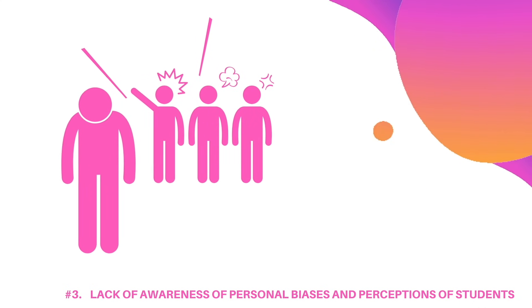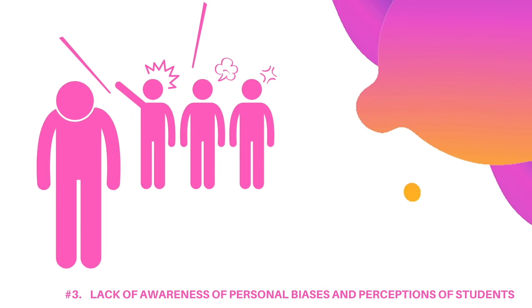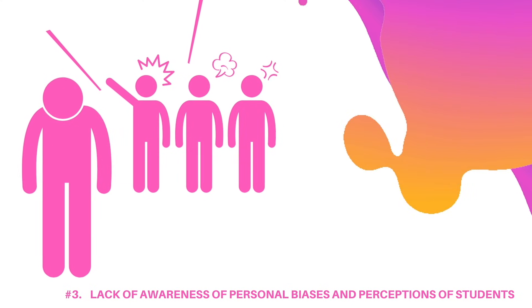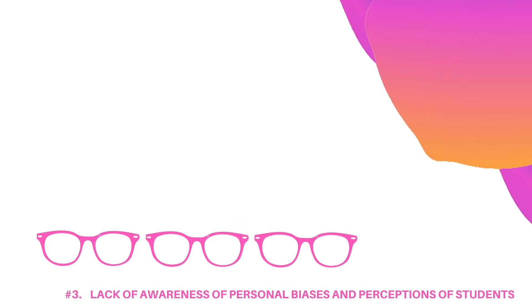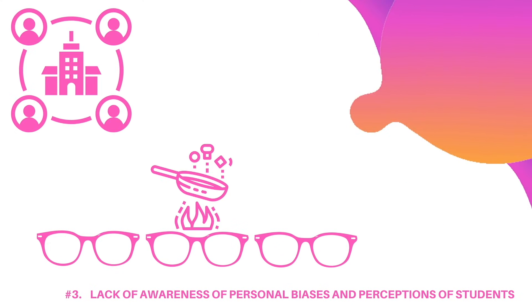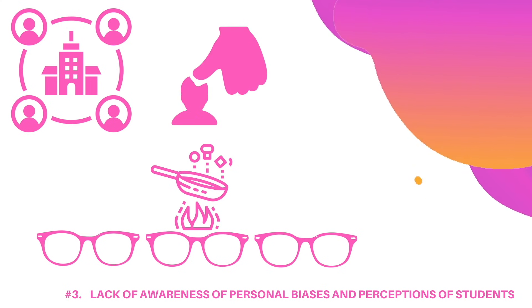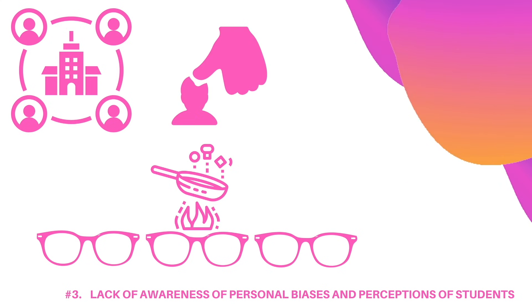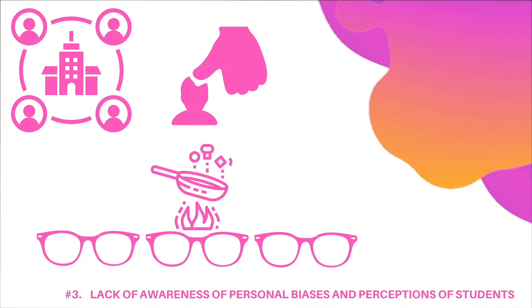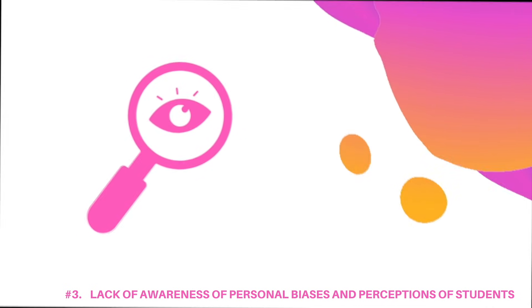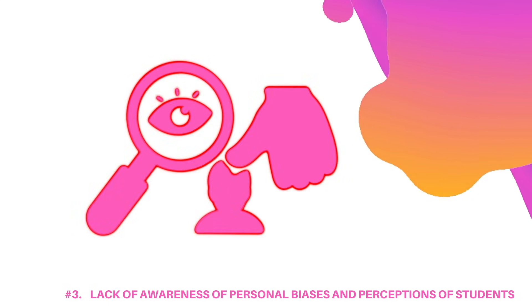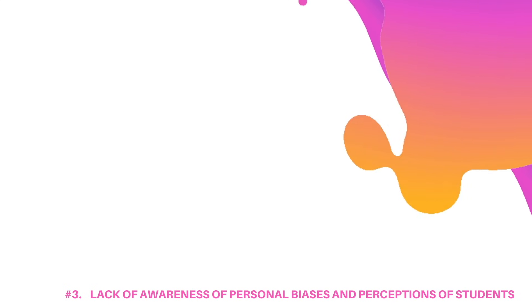Ableist, heterosexist, transphobic, and classist. Our beliefs as educators are what create systems and structures that marginalize students, and systems can also affirm our beliefs. We need to monitor and disrupt thinking that results in oppressive practices.